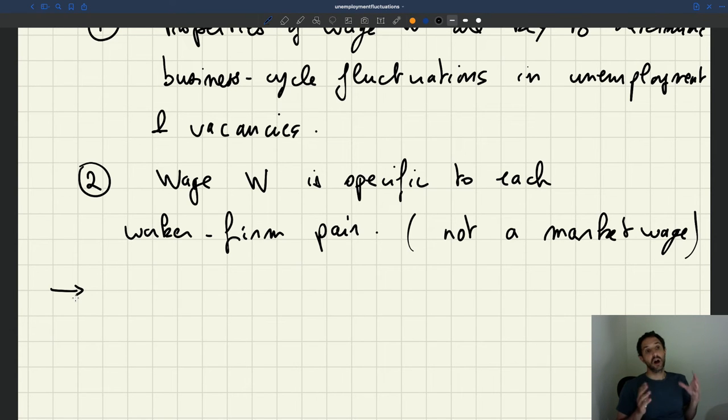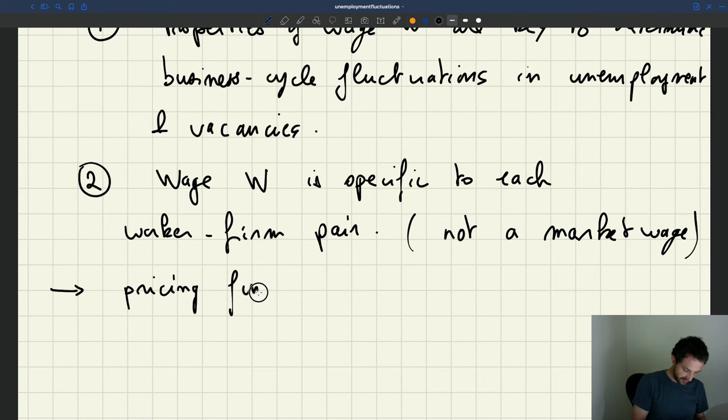It's a little bit like we have the production function that everybody knows that tells us how firms are able to use labor to produce goods and services. We have the matching function that tells us how vacant jobs and non-employed workers get together and how many of them are able to meet each other at any point in time. Then we have a pricing function that describes the wage W paid by firms to workers.